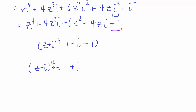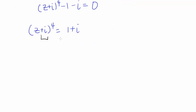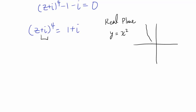One nice simplification: we can ignore the plus i, because adding plus i to z is only shifting the entire graph in the complex plane down by i. In the real plane, when you have y equals x squared and you graph y equals (x+1) squared, that shifts the entire graph down by 1. The same thing applies in the complex plane.